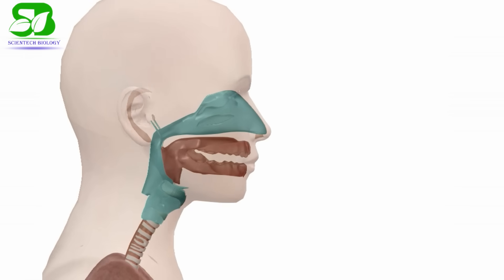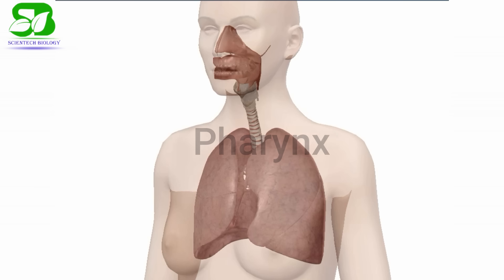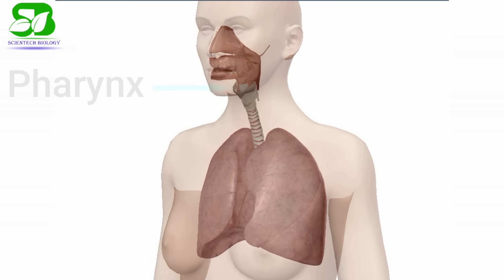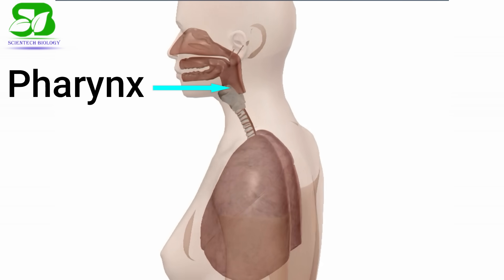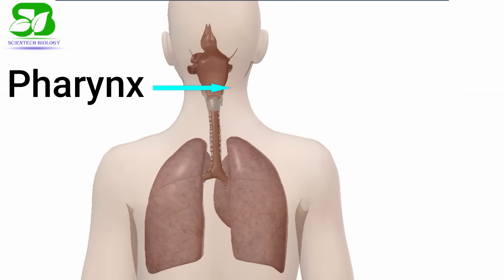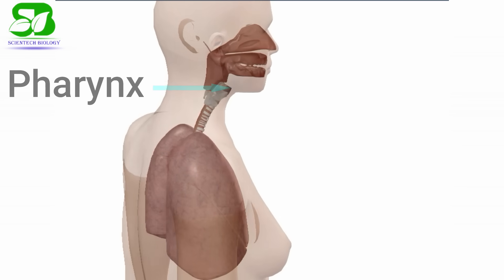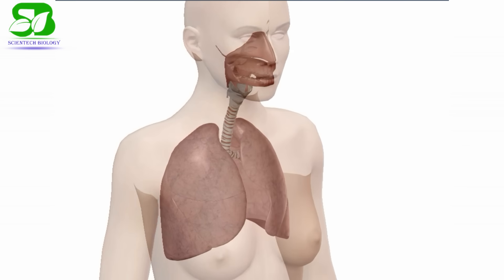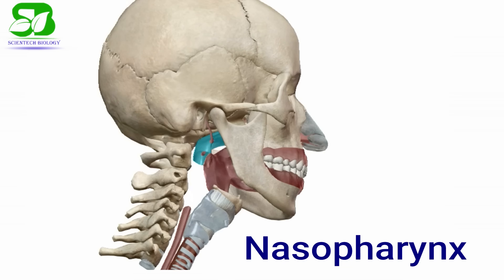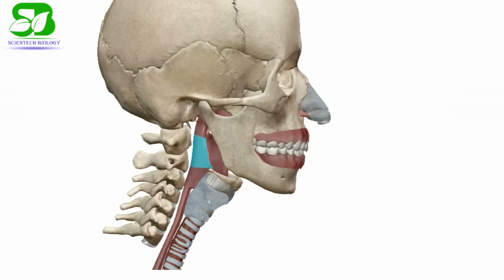The pharynx is a musculomembranous tube that functions as a part of the alimentary canal and as an airway in the upper respiratory system. The pharynx consists of three regions: the nasopharynx, oropharynx, and laryngopharynx.